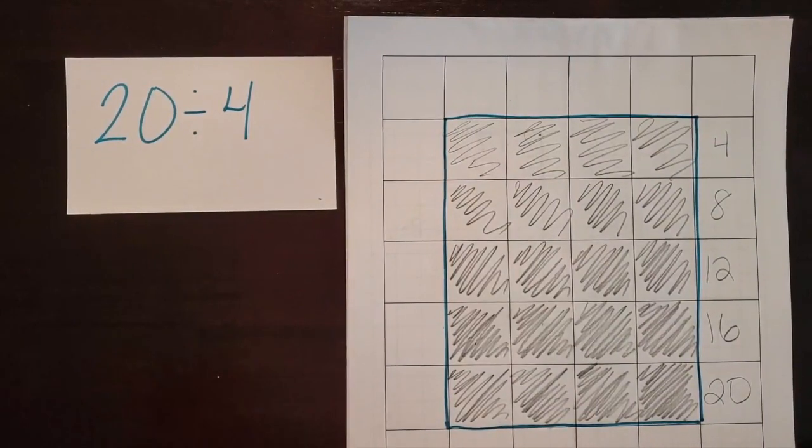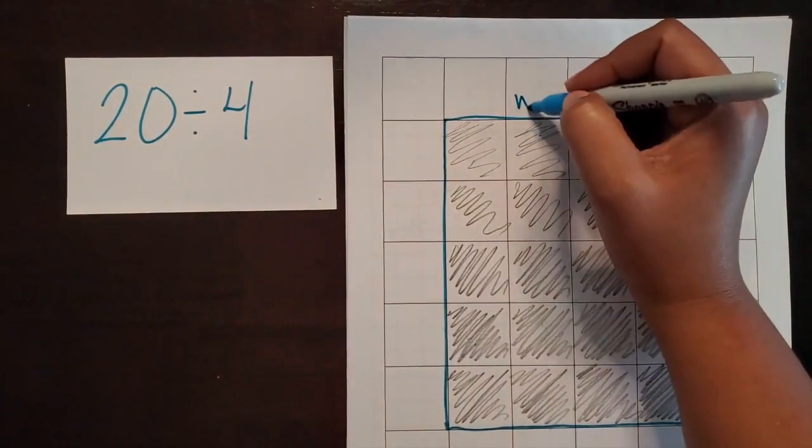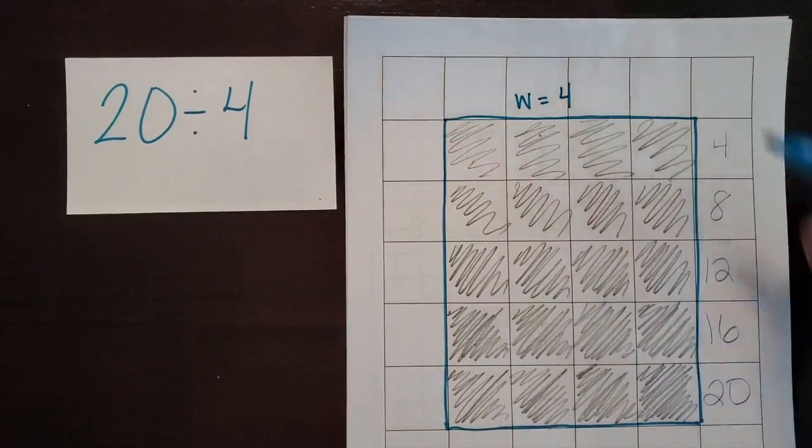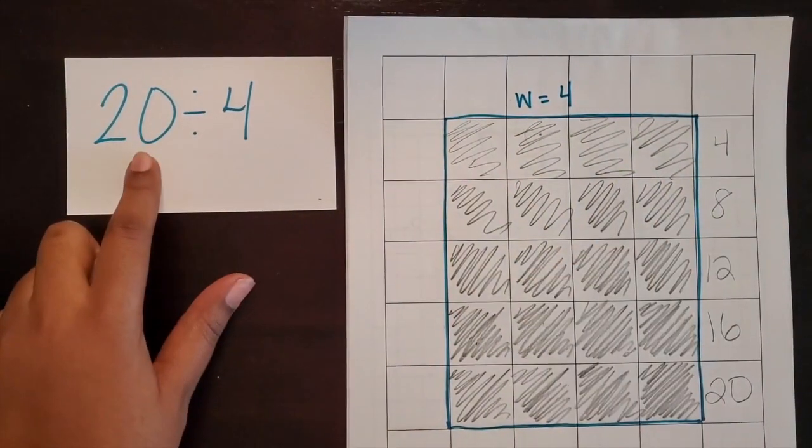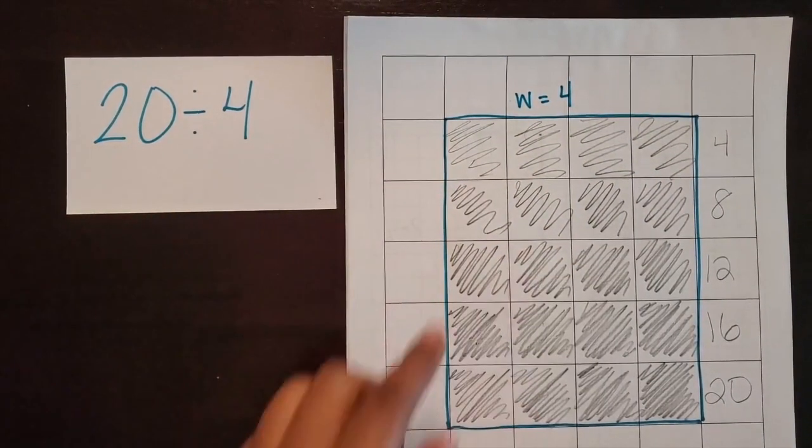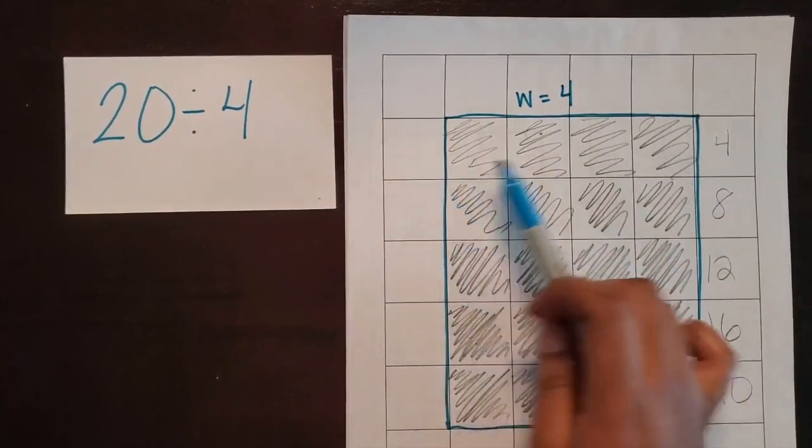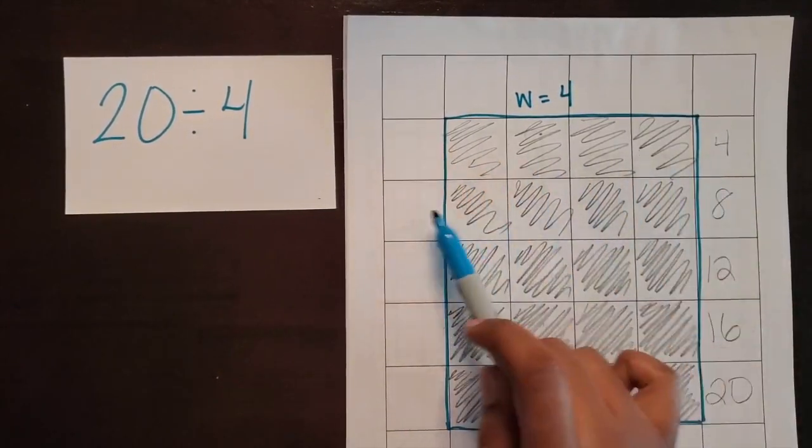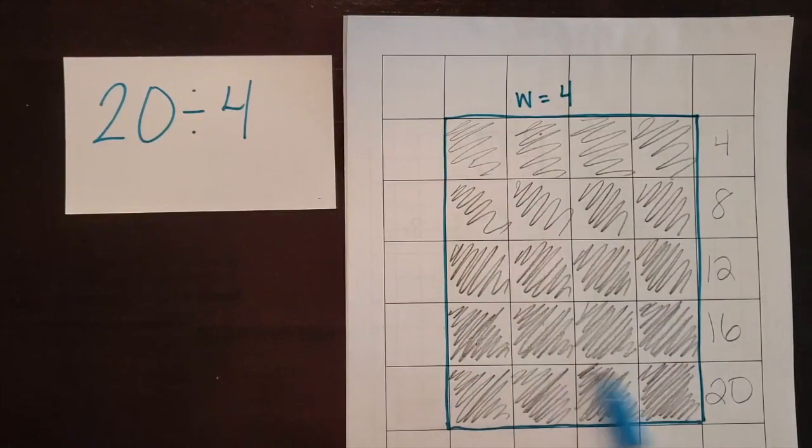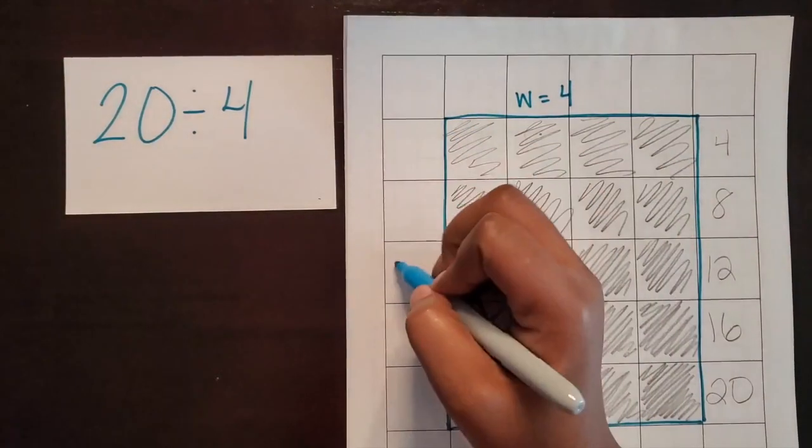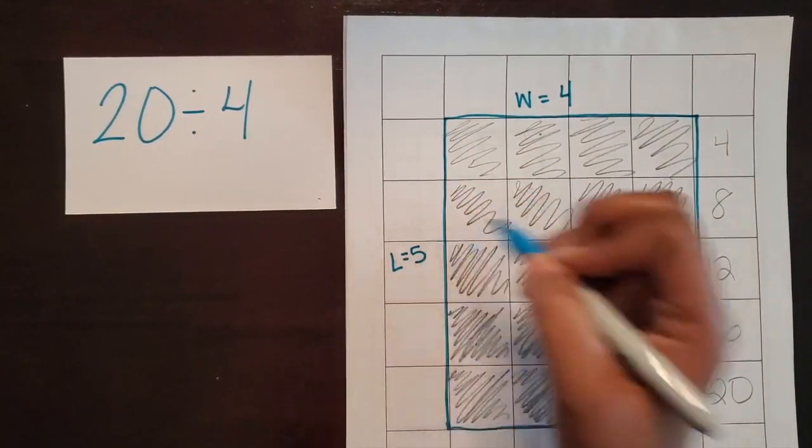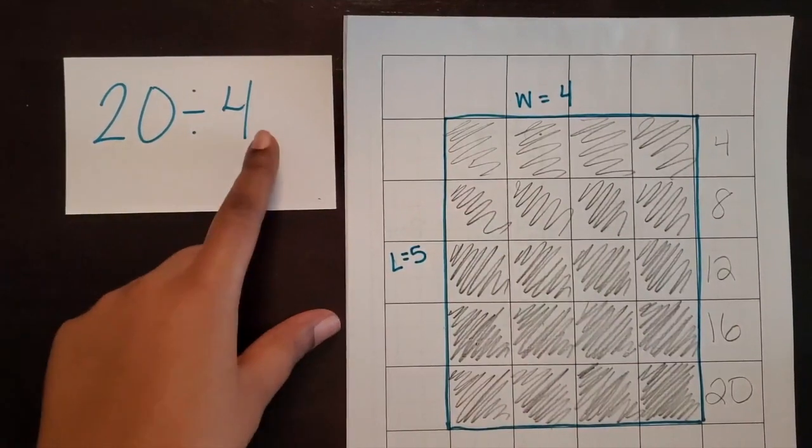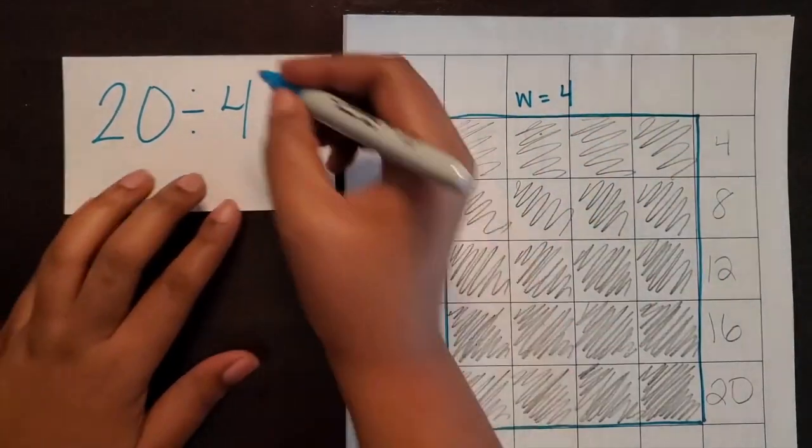Remember, we had a width of 4. And we knew that there were 20 square units that were going to be in the rectangle and we divided it by 4. So how many rows of 4 are there? 1, 2, 3, 4, 5. So that is a length of 5. So 20 divided by 4 equals 5.